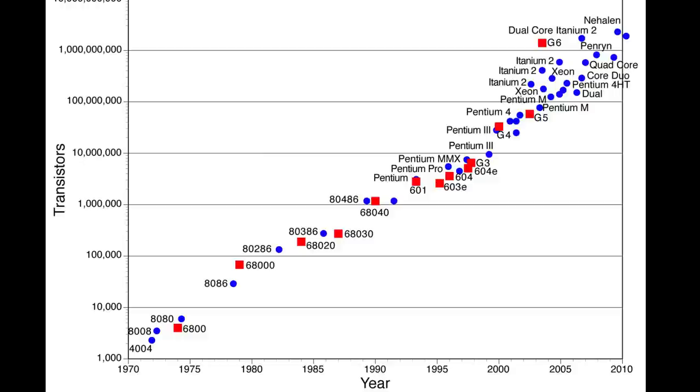A very famous observation was made in 1965 by Gordon Moore, co-founder of Intel. His observation was that the number of transistors per square inch on an integrated circuit had been doubling every year since the creation of the integrated circuit, and he predicted this trend would continue for the foreseeable future. In later years the pace slowed slightly; however, data density has doubled approximately every 18 months. This is the definition of Moore's Law, and most experts believe it will hold for at least another two decades.